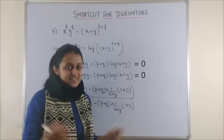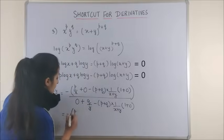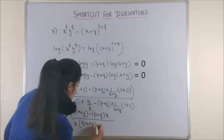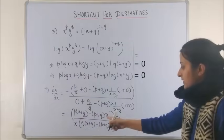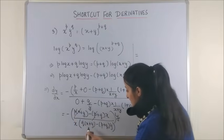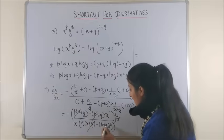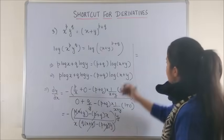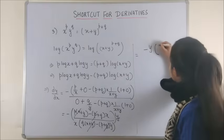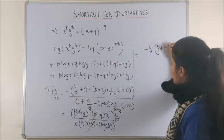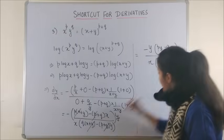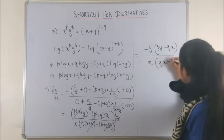Now, in order to simplify, just take your LCM. It would be... Now, if I just check this, px and px, they get cancelled. Similarly, here, your qy and qy would get cancelled. We will be left with minus of y into py minus qx upon x into, we will be left with qx minus py.